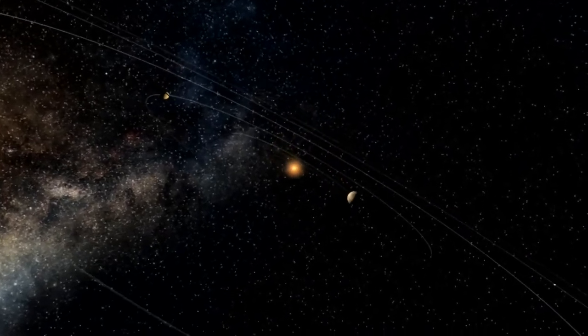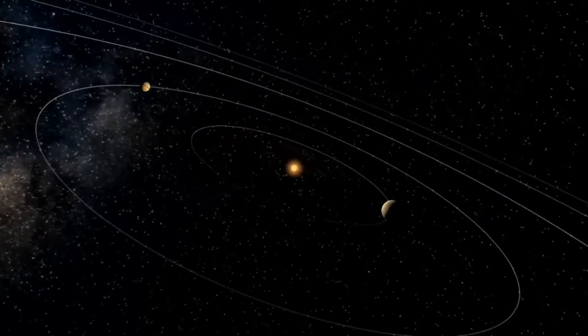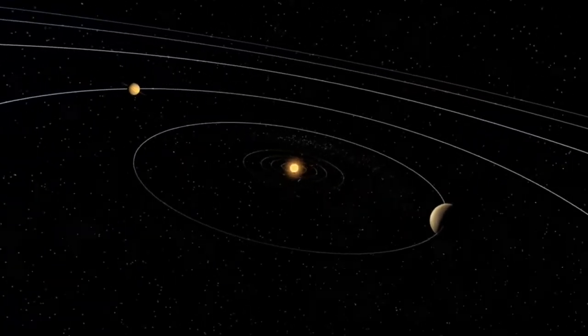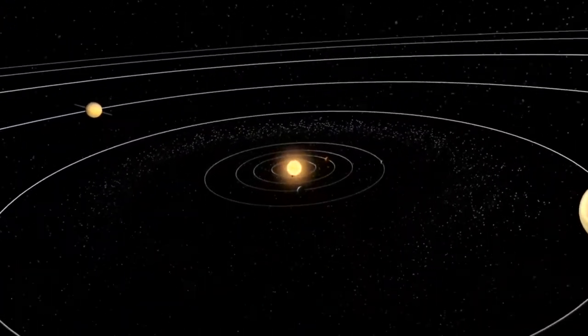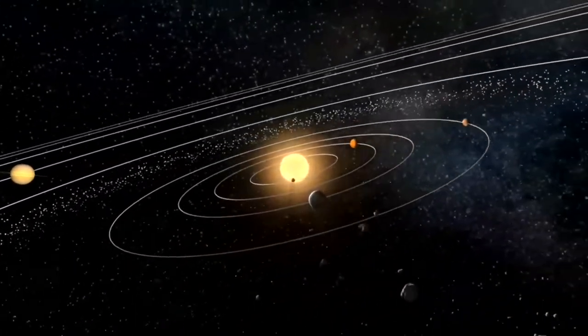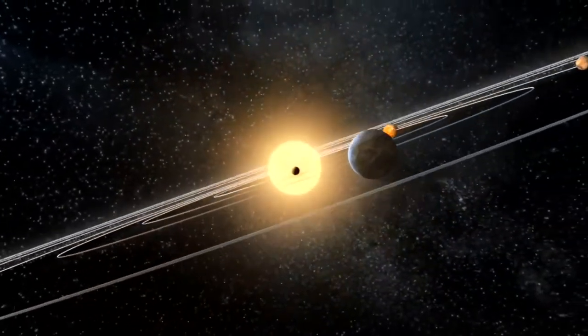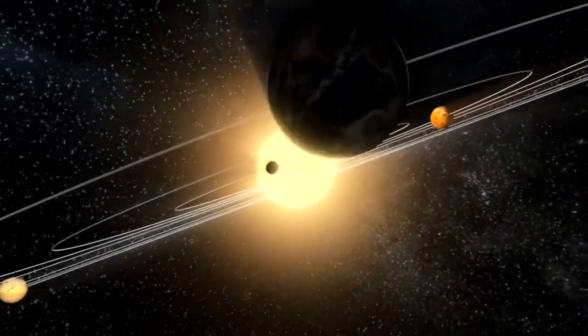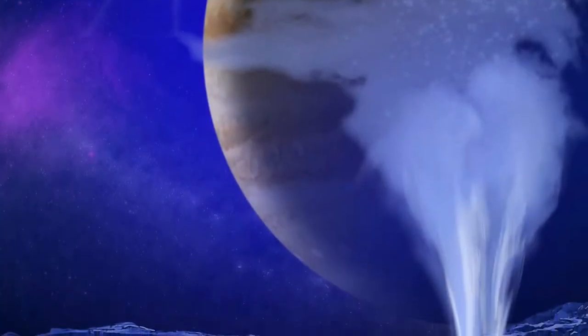When we look at our own solar system, we think of Earth as the most habitable world. After that many would probably say Mars and perhaps even the cloud tops of Venus. But after that, it's simple adding up to see that most of the potentially habitable places in our solar system are the moons of gas and ice giant planets.